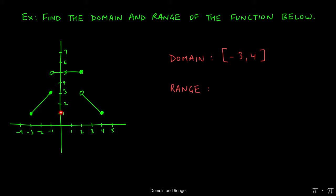For the range, the lowest y value the function hits is 1, and it goes up until 3. Even though there's a gap in the graph, y = 3 is achieved when x = -1, so 3 is included. Then there's a break in the y values, and the only other y value hit is 5, which is a single point. So the range is [1, 3] ∪ {5}, using curly brackets for the single value 5.